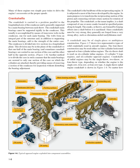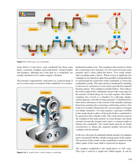A crankshaft may be of single-piece or multi-piece construction. The 4-throw construction may be used on 4-cylinder horizontal opposed or 4-cylinder inline engines; the 6-throw shaft is used on 6-cylinder inline, 12-cylinder V-type, and 6-cylinder opposed engines. Crankshafts of radial engines may be the single-throw, 2-throw, or 4-throw type, depending on whether the engine is single-row, twin-row, or four-row. No matter how many throws it has, each crankshaft has three main parts: a journal, crank pin, and crank cheek.